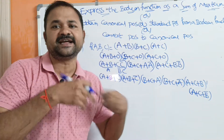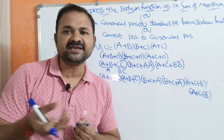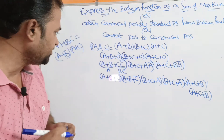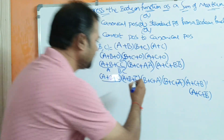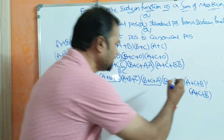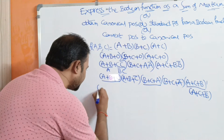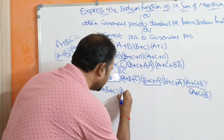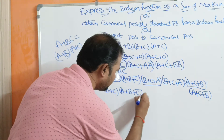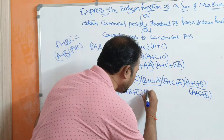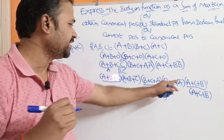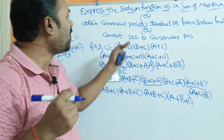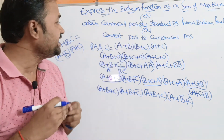Next, we have to check whether any term is repeating. If any term is repeating, write it only once, because we have the formula A + A = A. Observing the expanded terms: A + B + C appears multiple times, so we write it only once. We also have A + B + C̄ appearing once, Ā + B + C appearing once, and A + B̄ + C appearing once.